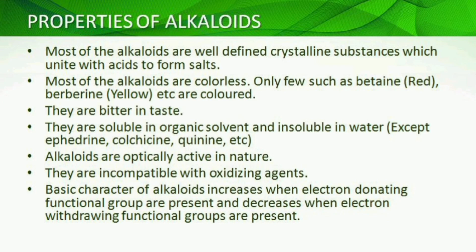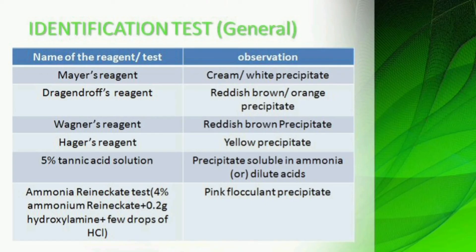General identification tests for alkaloids that will answer for all alkaloid types: Mayer's reagent gives a white precipitate. Dragendorff's reagent gives a reddish or orange precipitate. Wagner's reagent, Hager's reagent, 5% tannic acid solution, and the ammonia renegade test — these are the general tests for all alkaloids.